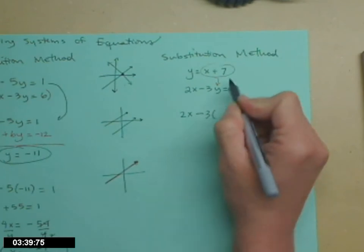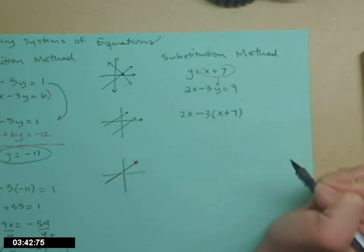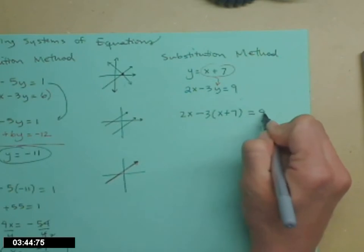So rewriting that second equation, 2x minus 3y, but y will now be played by x plus 7 equals 9.